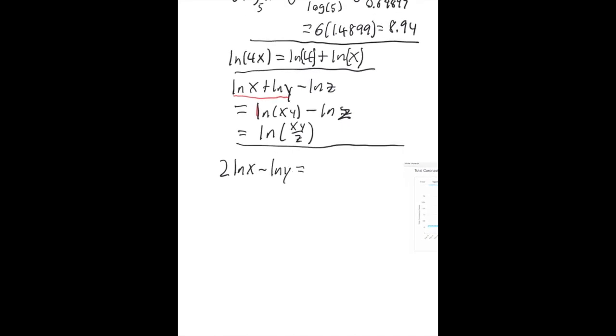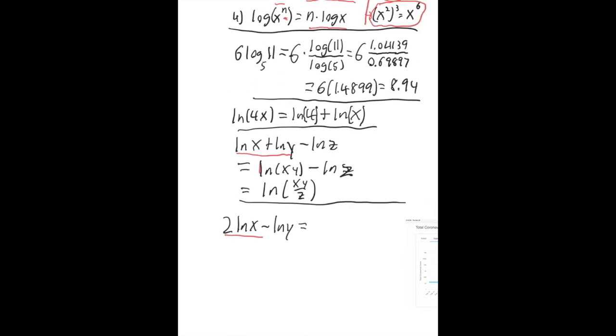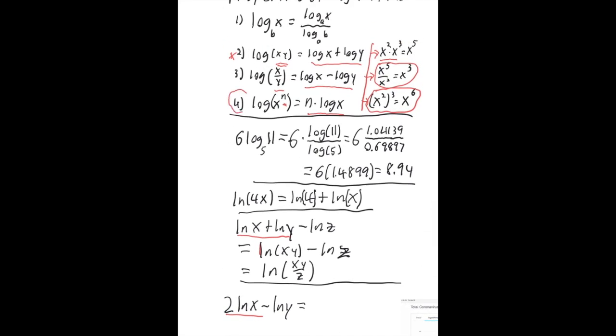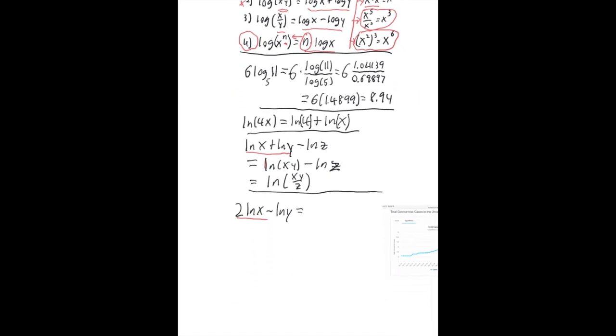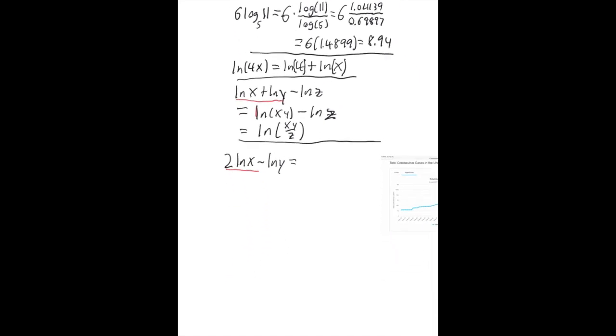So first what I'm going to do is, on this first part, I'm going to use the fourth property here, the one with exponents. I'm going to go from the right side to the left side. So the 2 is like the n, and then I've got a log. I can put that n back up on top. So 2 times ln x will be the same as natural log of x squared. And then I still have my minus ln y.